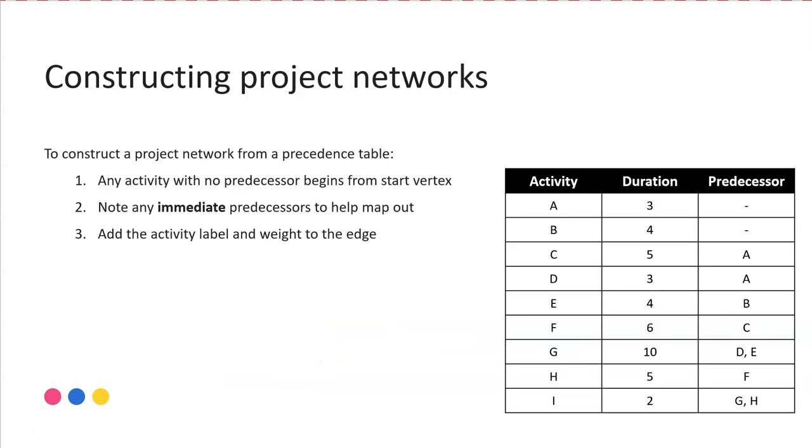Next we look at constructing project networks from the precedence table. If you have to draw something from scratch, it's a good idea to draw it in pencil because it can sometimes be tricky or challenging to visualize how the edges should flow until you get partway through. What you are looking for though, any edge that has no predecessor, like A and B here in the table, that means that they commence at the start. So we have a start of our project and we know that activity A and activity B will commence at that start point. And so we can add in our weights and we have activity A and B drawn in.